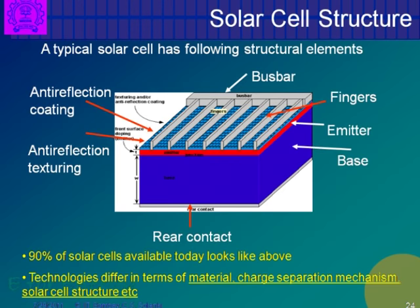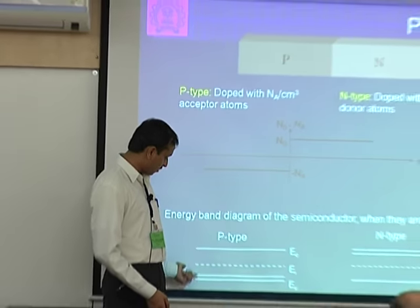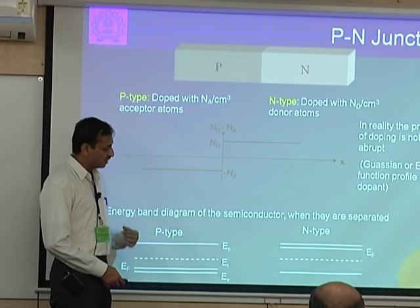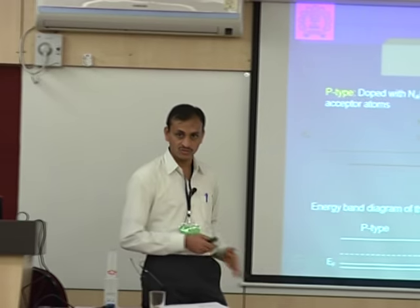This is how your junction should look. In p-type semiconductor, the Fermi level is close to the valence band; in n-type, the Fermi level is close to the conduction band. In the December course we will go through these details; right now this is just an introduction to PV.